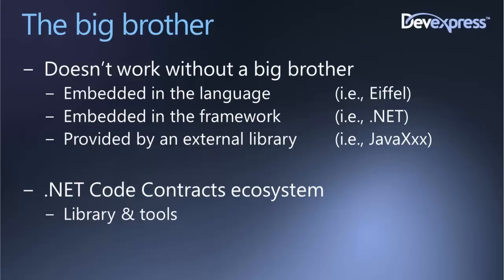The third option, pretty common in Java and JavaScript, is achieving tools for proving correctness by linking an external library. In .NET, the ecosystem of code contracts is made of a bunch of libraries, classes, and tools. Classes are essentially one — the Contract class — found in the namespace System.Diagnostics.Contracts. It's just one class with a bunch of static methods that provide for invariants, preconditions, post-conditions, and a few other facilities.